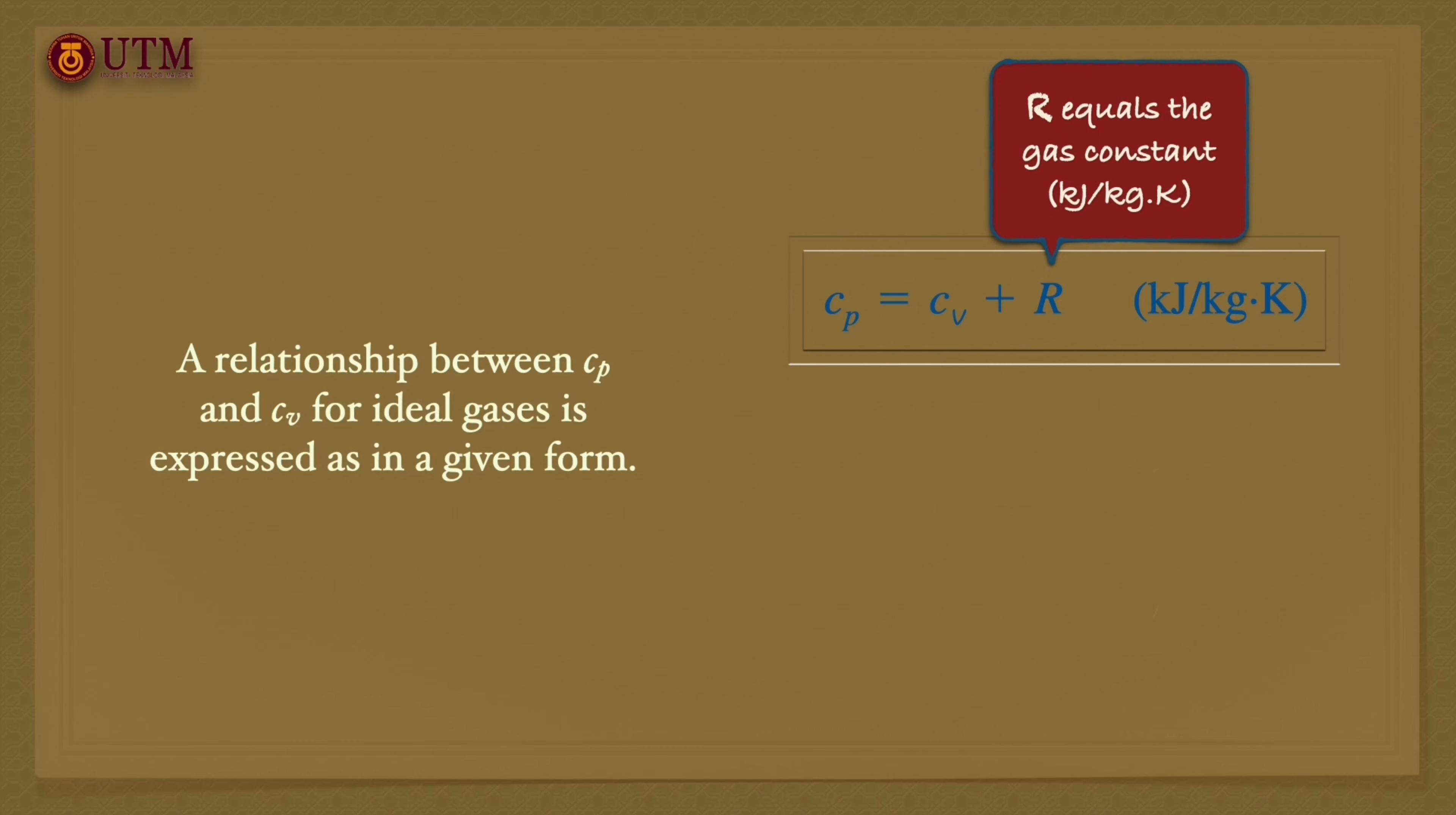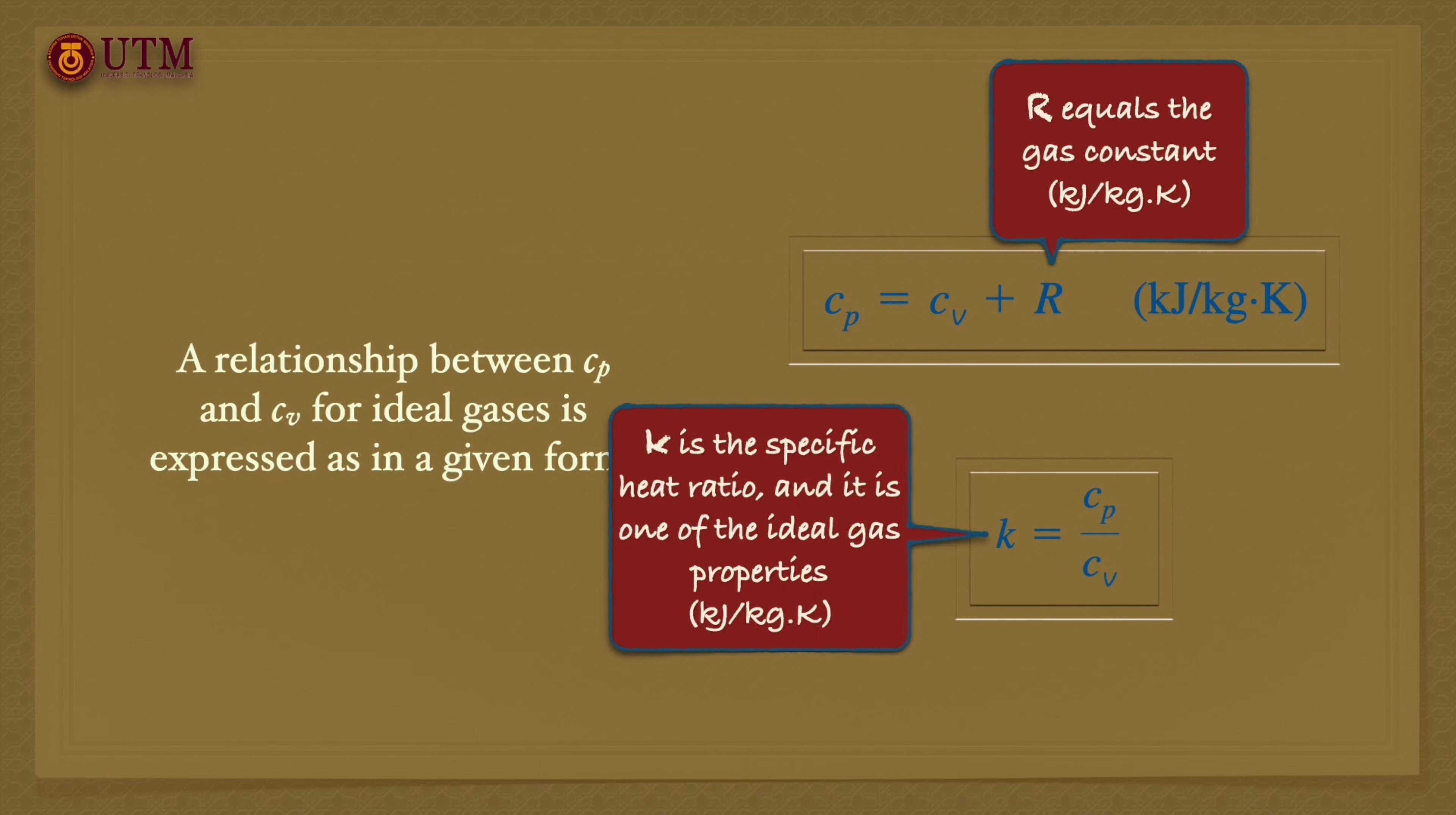A relationship between Cp and Cv for ideal gases is expressed in the given form. At this point, we introduce another ideal gas property called the specific heat ratio, denoted as K.